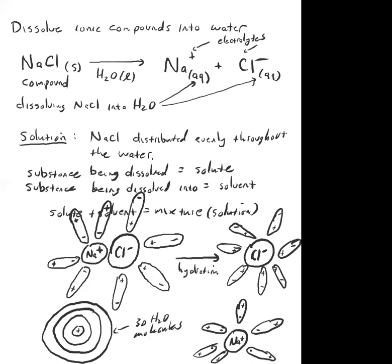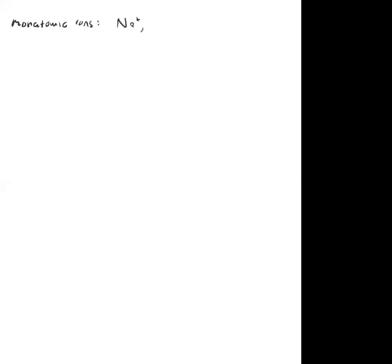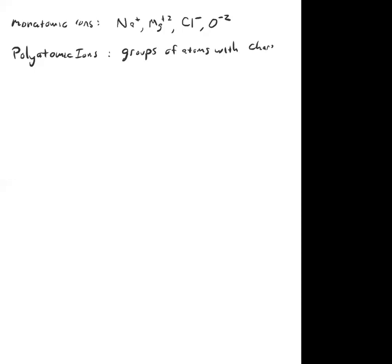Now I want to give you a brief intro to the second type of ions. We did monatomic ions — sodium, magnesium, chloride, oxide — those are one-atom ions and they're easy. But there are more complicated ions that exist in nature called polyatomic ions, and most of them are anions. These are groups of atoms with a charge, and there's a bunch of them.